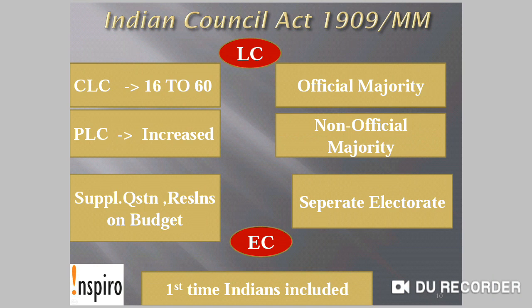Indian Council Act 1909, also known as the Morley-Minto Reform, is notable for giving communal representation. Under this act, the Central Legislative Council number increased from 16 to 60, but official majority was maintained. Provincial Legislative Council numbers also increased, but varied from province to province — non-official majority was allowed, meaning some provinces had official majority while others had non-official majority. Supplementary questions and resolutions on the budget were also allowed.